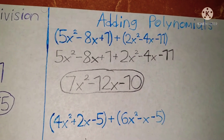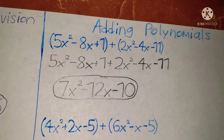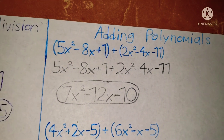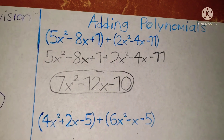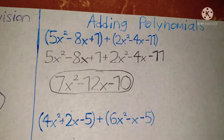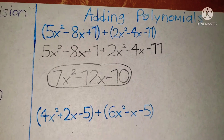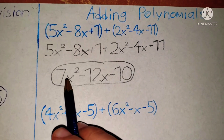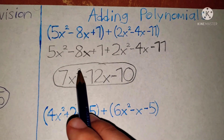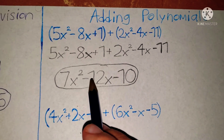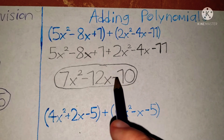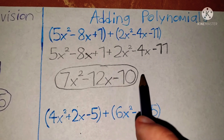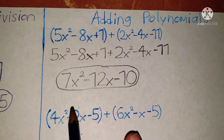And there you go guys, this is how you solve polynomials by adding. So the answer is 7x squared minus 12x minus 10 — this is how you get it.